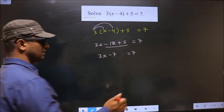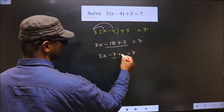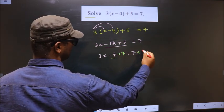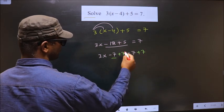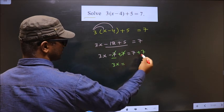What I mean is, minus 7 should not stay on this side. So to remove minus 7 from here, you add 7 on both sides. This cancels out here, 3x equals 7 plus 7, 14.